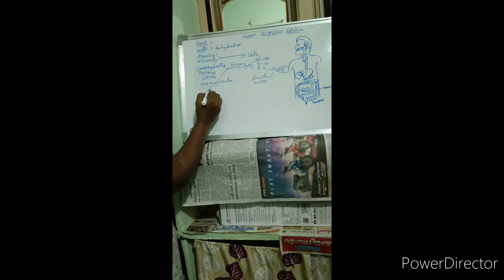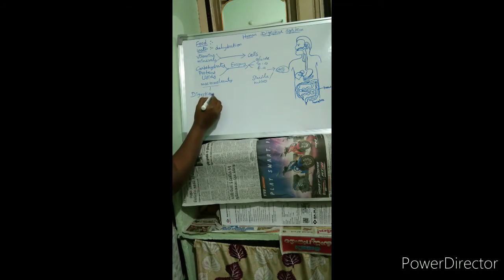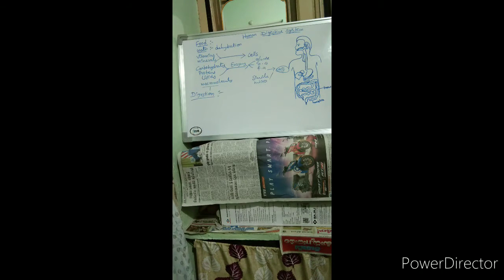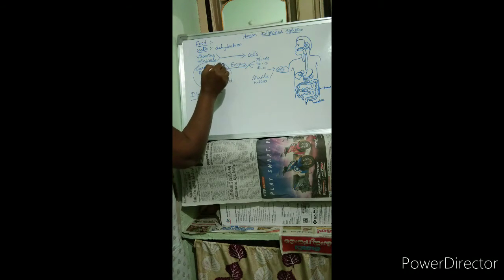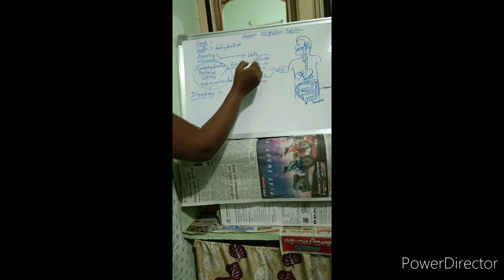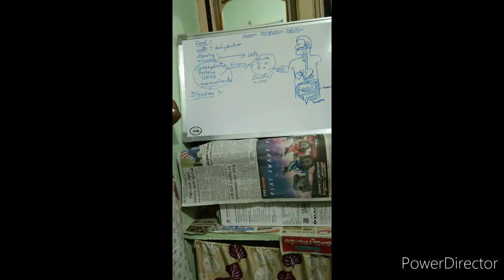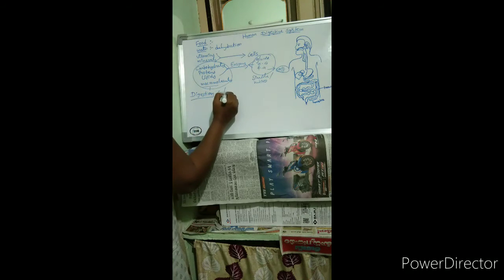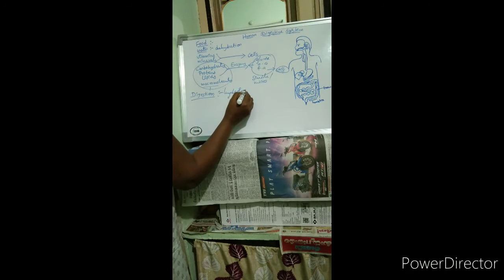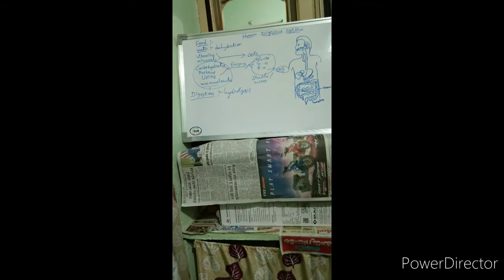What is the meaning of digestion? Digestion is a process in which complex food substances are converted into simple absorbable forms. That is called digestion. This process is also called hydrolysis.